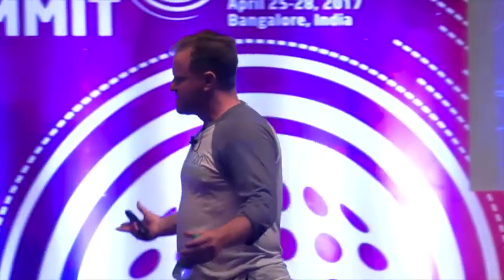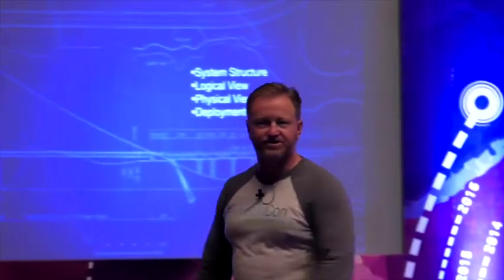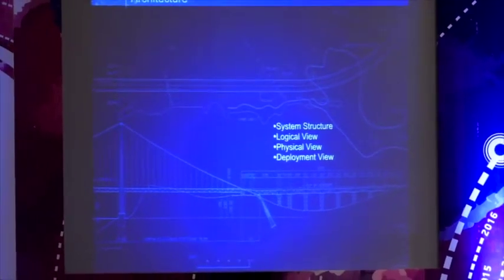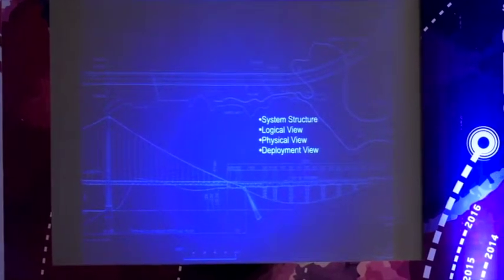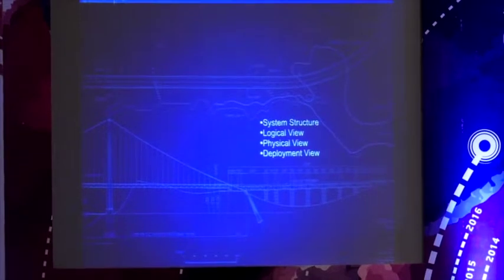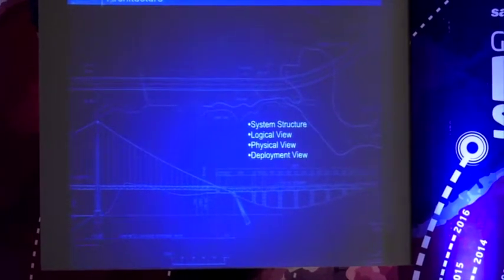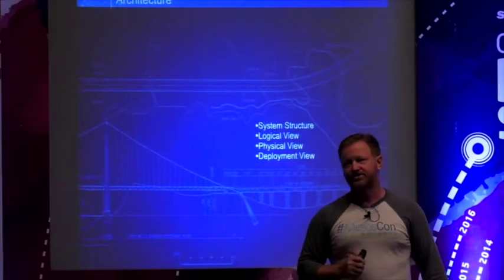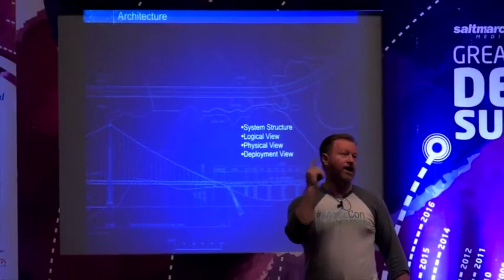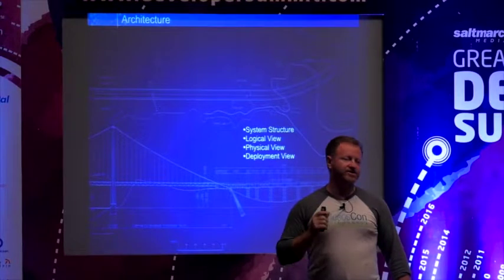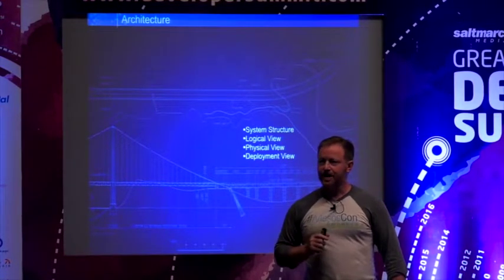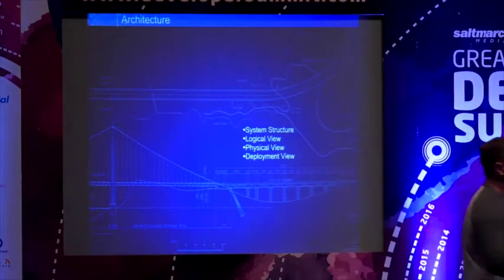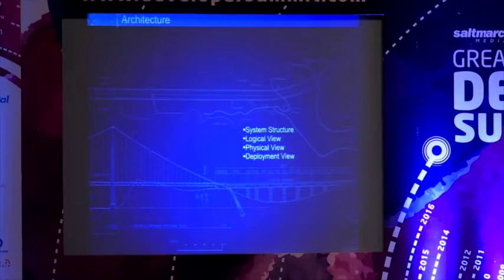As an architect, you have to be able to communicate and understand things at different levels — schematics, system structure, logical views, physical views. You have different levels of abstraction. One thing that stands out from my experience of people who are good at architecture is being a good abstractionist — that's a really important and relatively hard-to-find skill.